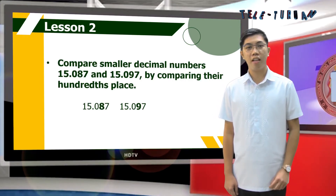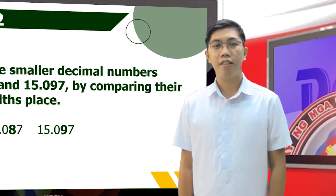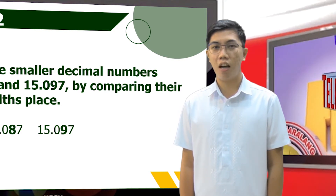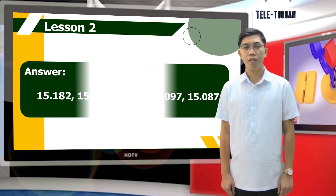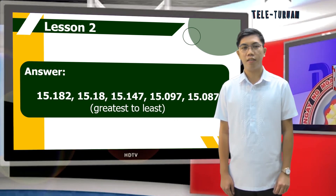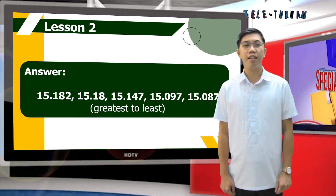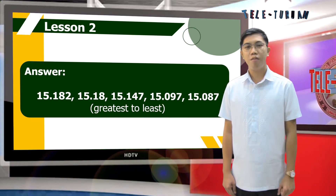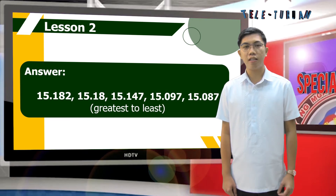Compare the smaller decimal numbers by comparing their hundredths place. Nine is greater than eight. Therefore, fifteen and ninety-seven thousandths is greater than fifteen and eighty-seven thousandths. Now we will list the numbers from greatest to least: fifteen and one hundred eighty-two thousandths, fifteen and eighteen hundredths, fifteen and one hundred forty-seven thousandths, fifteen and ninety-seven thousandths, and last, fifteen and eighty-seven thousandths.